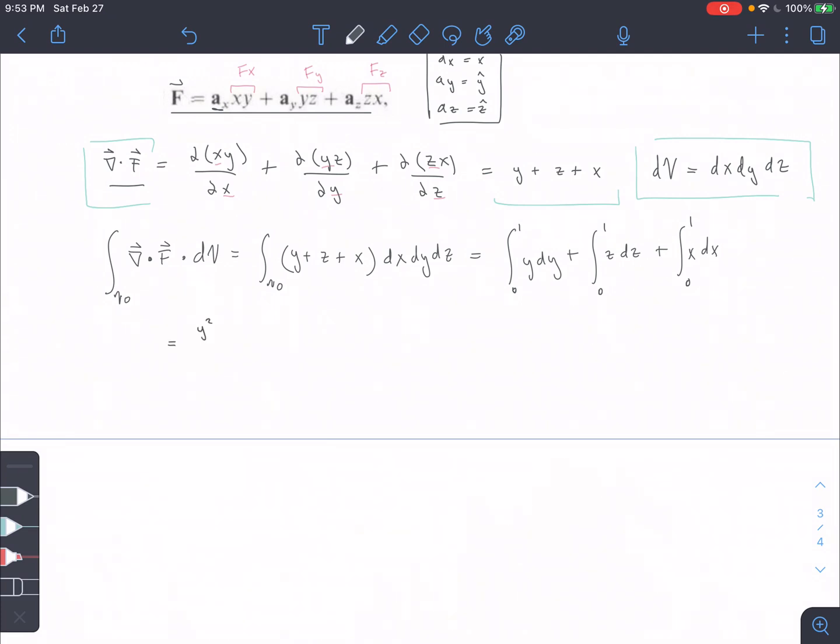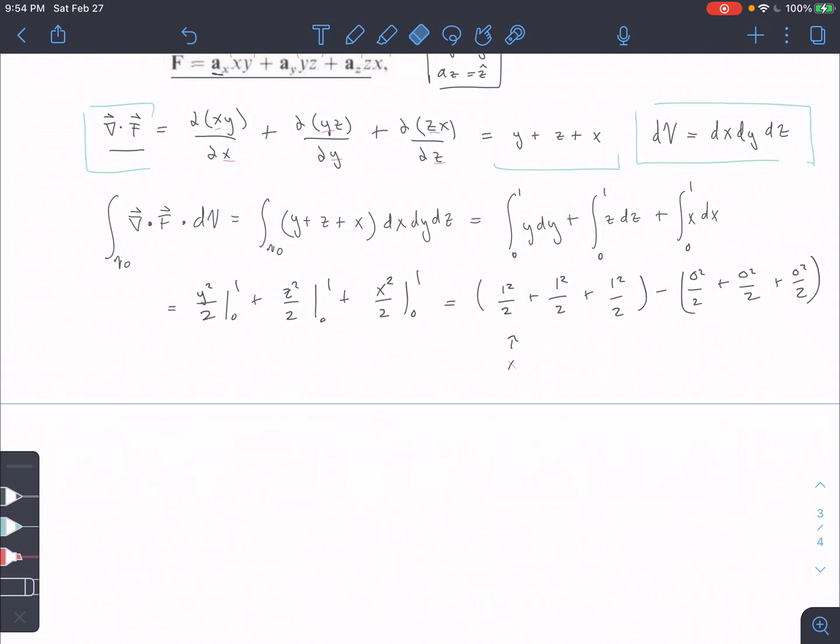And then I'm going to evaluate my integral. So I'm going to end up with y squared over 2 from 0 to 1 plus z squared over 2 from 0 to 1 plus x squared over 2 from 0 to 1. So that's going to turn into some of these top bounds minus the bottom bounds, 1 squared over 2 plus 1 squared over 2 plus 1 squared over 2. So this is like x, y, and z minus 0 squared over 2 plus 0 squared over 2 plus 0 squared over 2. Again, x, y, and z. And then my solution is equal to 3 halves.